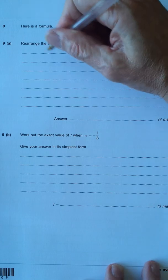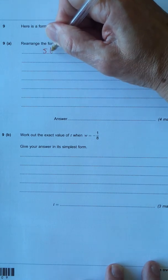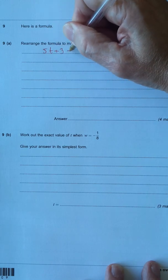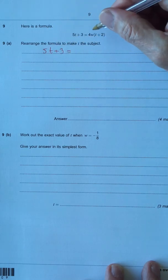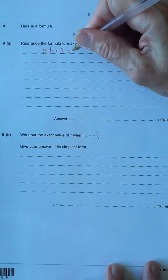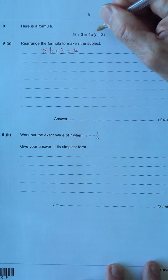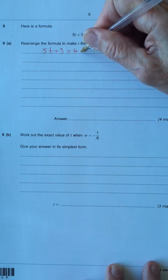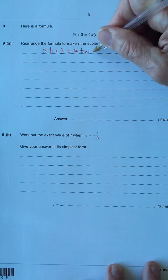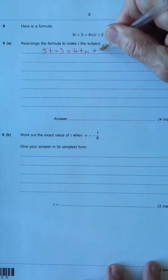So let's have a look. We've got 5t plus 3 equals, let's multiply the brackets out, 4, and I'll put in alphabetical order because that's standard practice, 4tw plus 2, 4's at 8w.